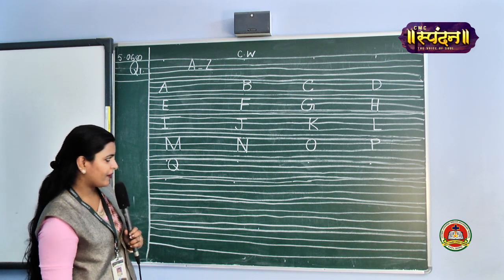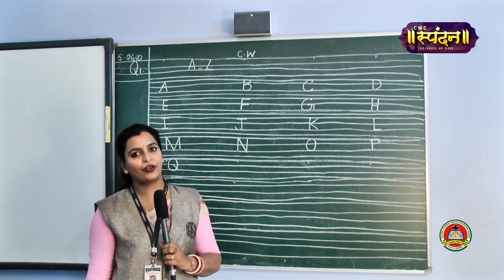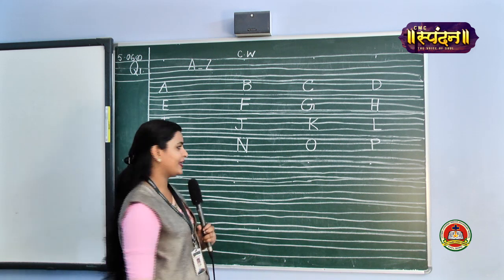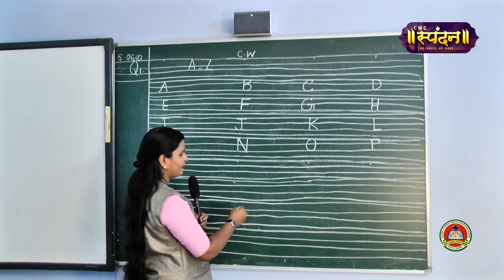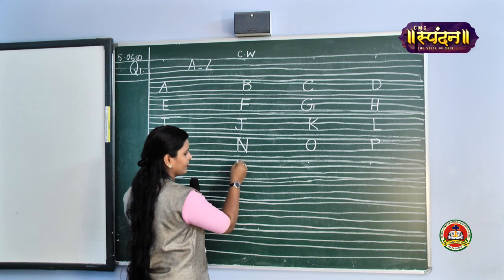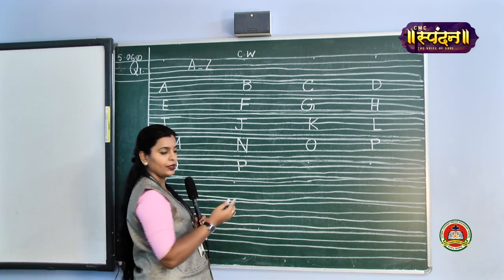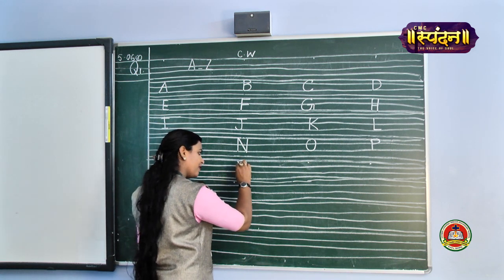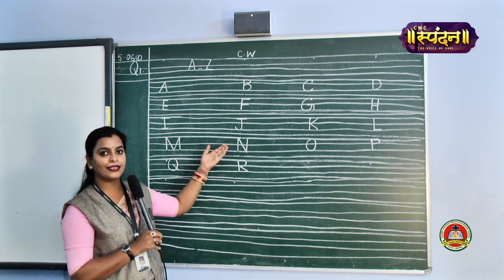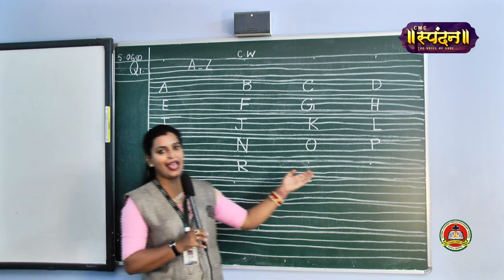Our next alphabet is R. R is for Rose, R is for Rabbit, R is for Rat too. Our next alphabet is alphabet R. We again start from the pink line, bring it to the black line, make a curve as we did for P, and then make a slanting line. It becomes an R. R will come just below N.